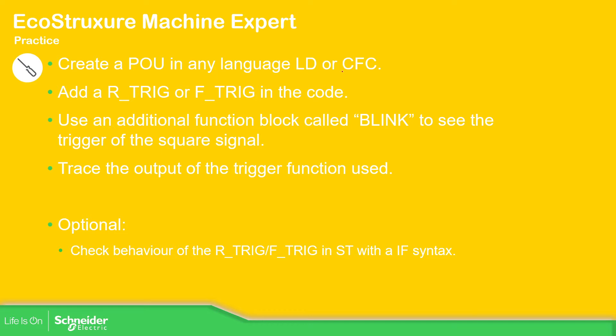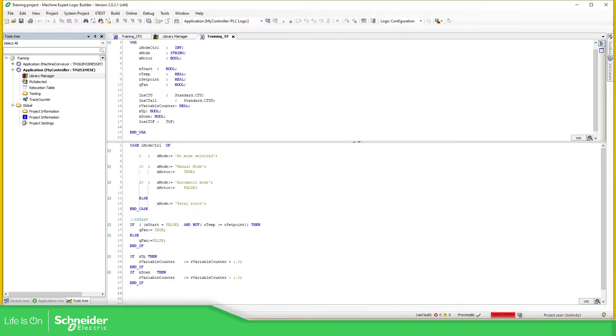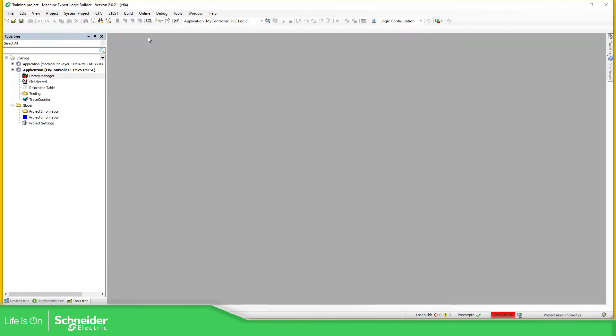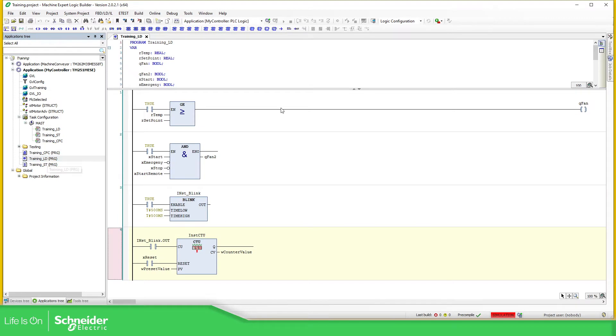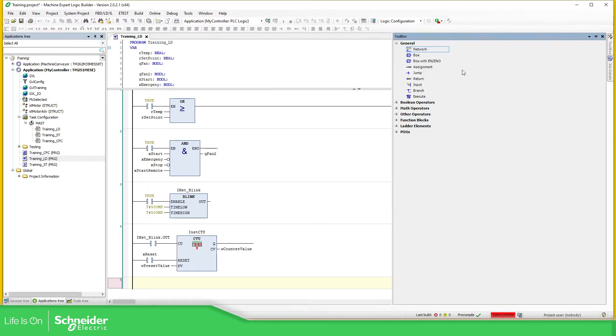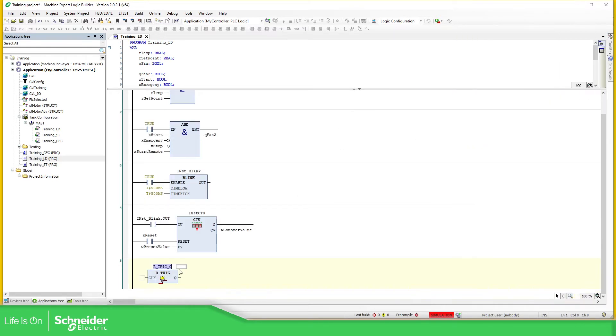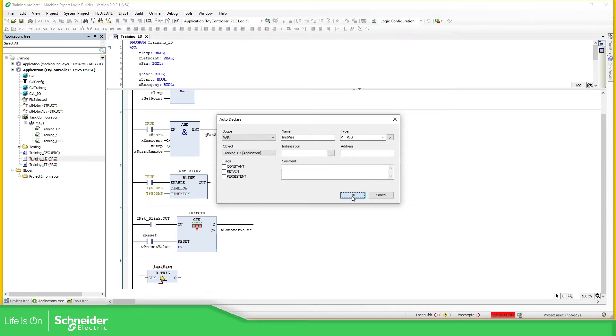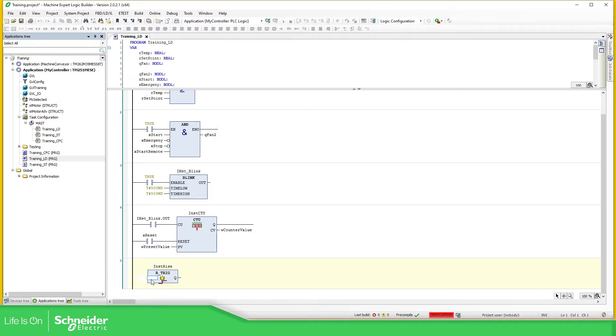Let's try to use the ladder. So I have already created this function block. This POU ladder is the one that we were working with. So I'm going to add a new run. And here I'm going to add one of the triggers. So these are new function blocks. Then you can select, drag and start over here. Here it asks you for an instance. So I recommend you to define the instance, rise, like this.